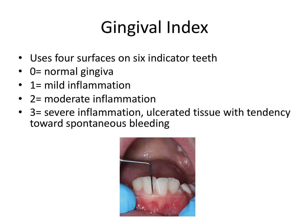Next we have the gingival index, or the gingival score. This one designates the amount of gingival inflammation based on swelling, redness, and presence or absence of bleeding upon gentle probing. The gingival index uses four surfaces on six indicator teeth — that's one in every sextant of the mouth. There are other versions where you measure every single tooth, but we're going to focus on the one that uses six. You would look at four surfaces — the facial, mesial, distal, and lingual gingiva — and you're looking for swelling, redness, and bleeding.